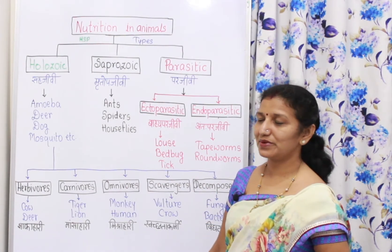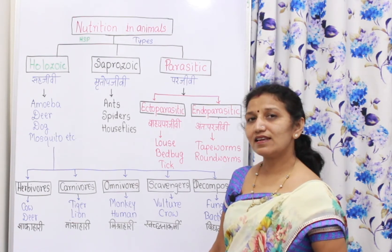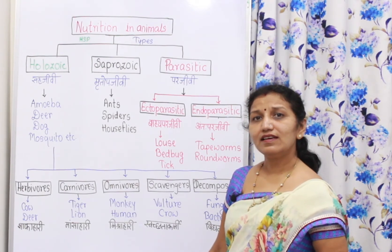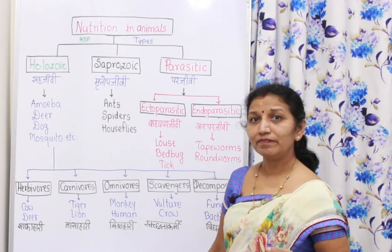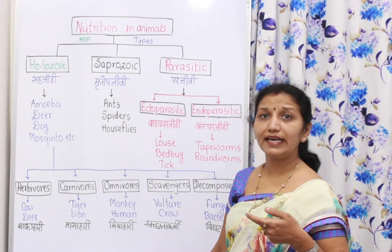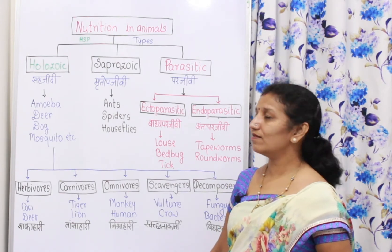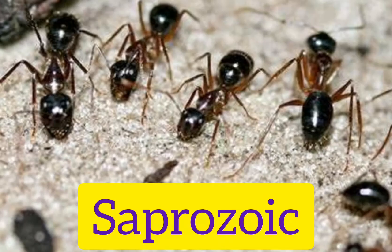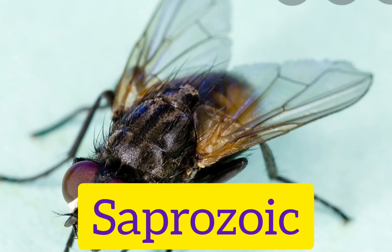Then saprozoic — 'saath' stands for saprozoic, meaning mhrutopajivi. These are animals that nourish themselves by absorbing liquid material from dead organisms or from the environment. Examples are ants, spiders, and house flies.